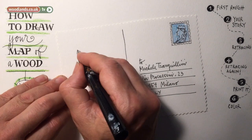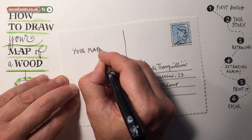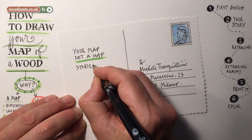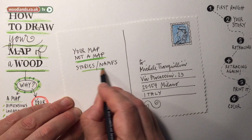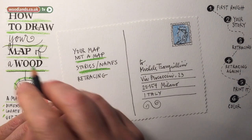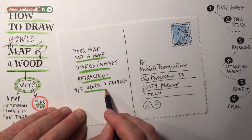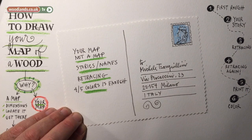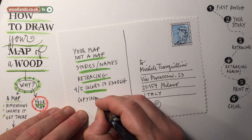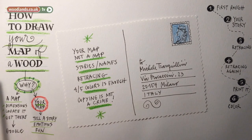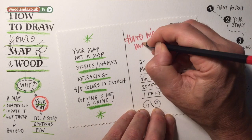Recapping: your map could be more interesting than a regular map. Play with names and stories. Remember the retracing trick to get the composition more and more accurate. Forget the full color palette for now — four or five colors is enough. Look at maps and atlases and find their inspirations. Copying is not a crime — it's a good way to learn. Remember this, and have nice maps!